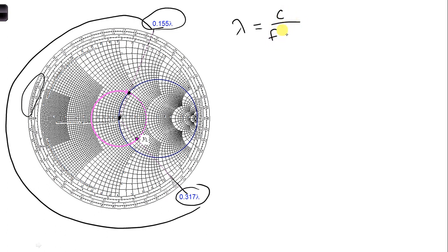But actually we are in air, so normally here there might be an epsilon r, but we're in air, so that's going to be just 1. So we have 3 times 10 to the 8th over 20 times 10 to the 6th, which gives us 15 meters.